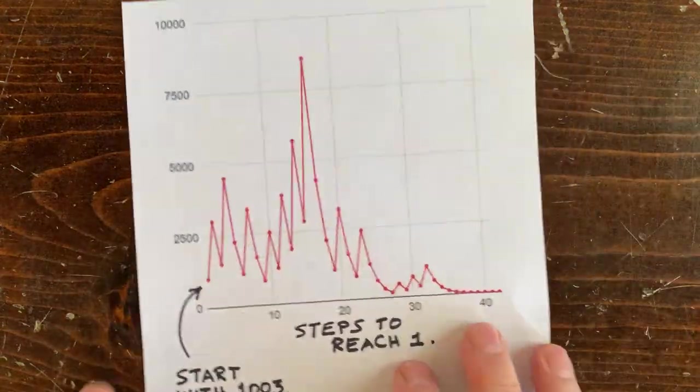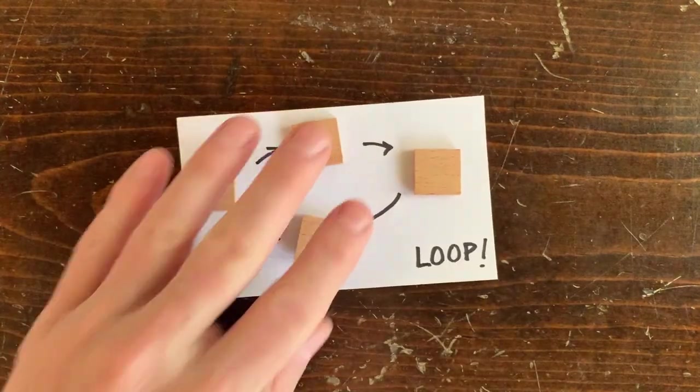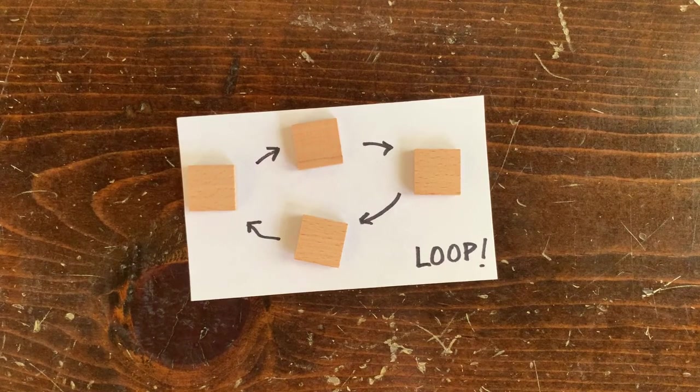1003 goes to 1, but maybe there's some number that loops back on itself and never gets to 1. If we have a specific operation sequence, like a half followed by 3n plus 1 over 2, then we can compose the operations.